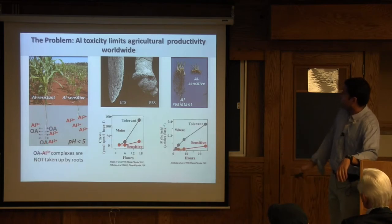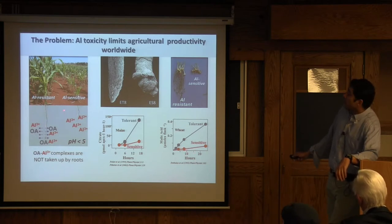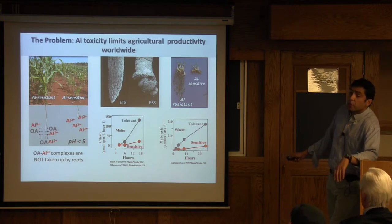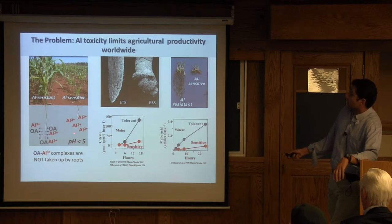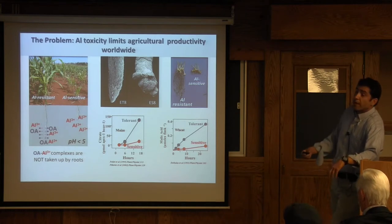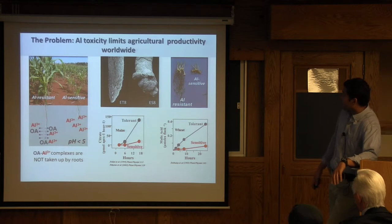Fortunately, there is genetic variation in crop plant species which we can exploit to understand the physiological mechanisms underlying aluminum resistance. For most crops, aluminum-resistant varieties — described as early as the early 90s — upon exposure to aluminum, release organic acids into the rhizosphere. These organic acids chelate the aluminum, forming complexes that are not toxic and are not taken up by the roots, thereby excluding aluminum from the root system and preventing its phytotoxic effects.